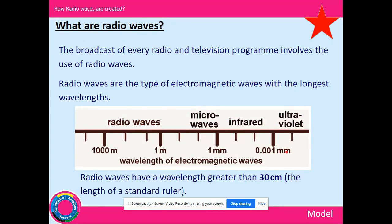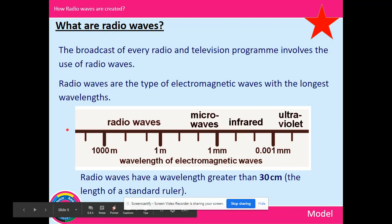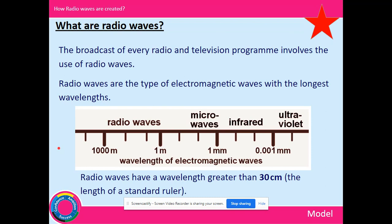What are radio waves? Broadcasts of every radio and television program involve the use of radio waves. Radio waves are the type of electromagnetic waves with the longest wavelengths — building size, street size, town size; they're quite big. Radio waves have a wavelength greater than 30 centimeters, the length of a standard ruler. So a standard school ruler represents the shortest wavelength radio waves can have.